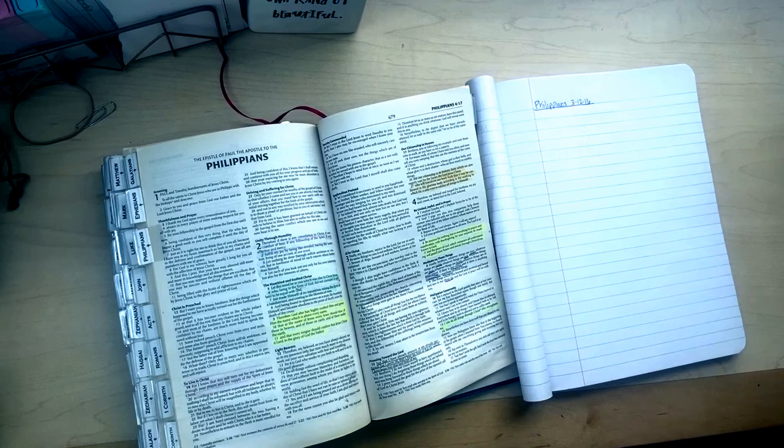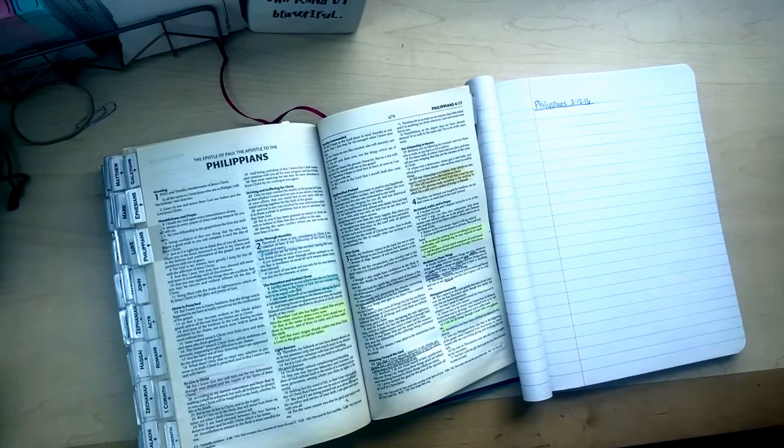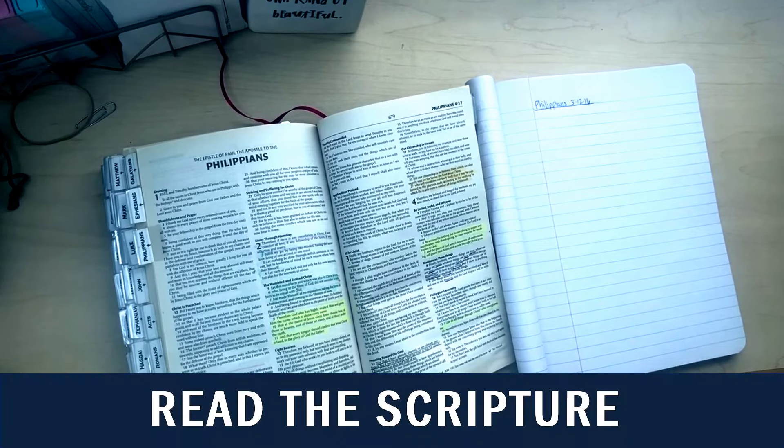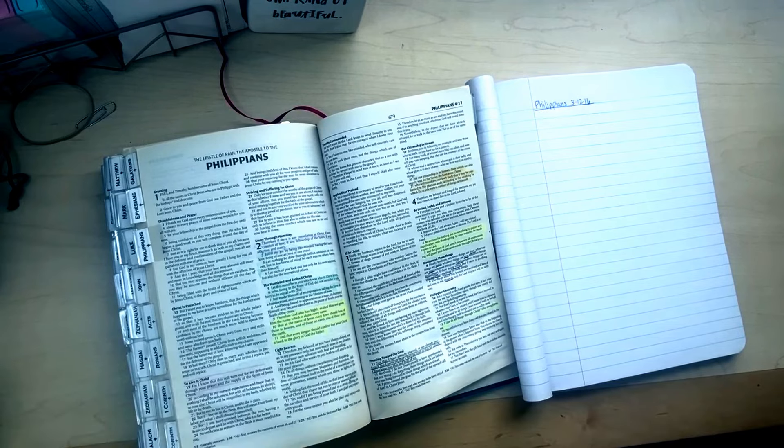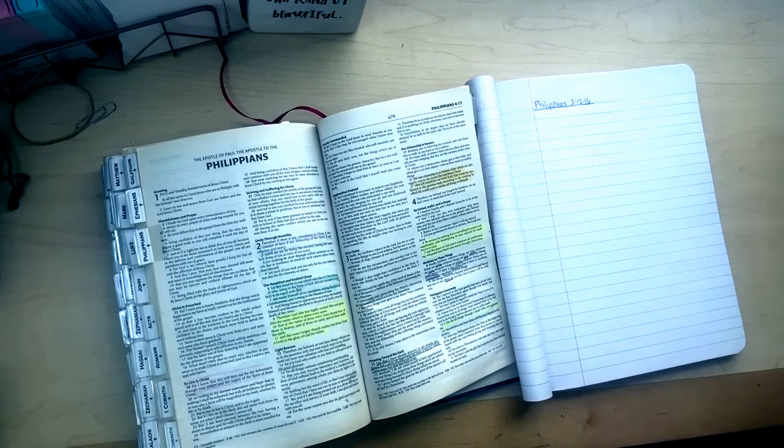So we begin with prayer and we end with prayer. So if I'm looking at Philippians 3:12 through 16, the first thing I have to do is read it. And I recommend reading it out loud. I know for me, when I read scripture out loud, I tend to understand it a lot more and a lot easier than when I just read it in my head. So what I'm going to do just for this video is read through it one time out loud. So Philippians 3:12 through 16. And I'm reading it from the New King James translation.